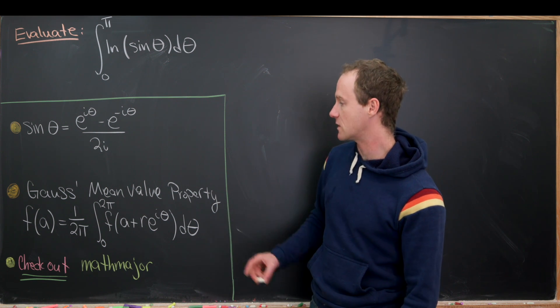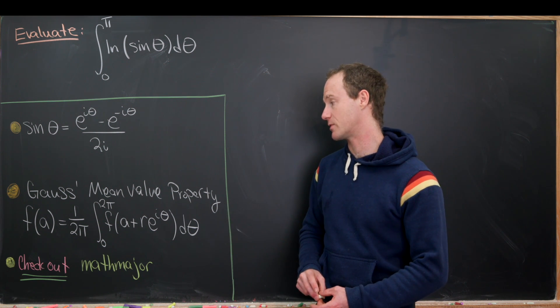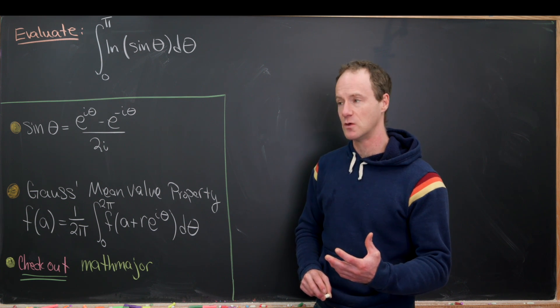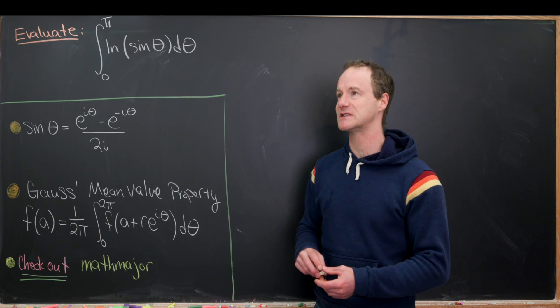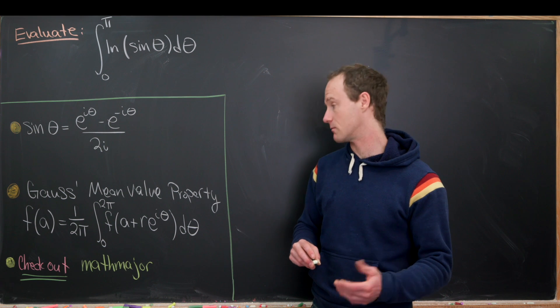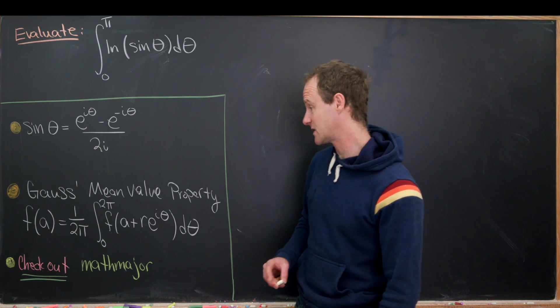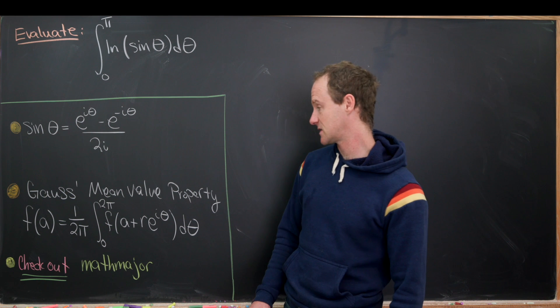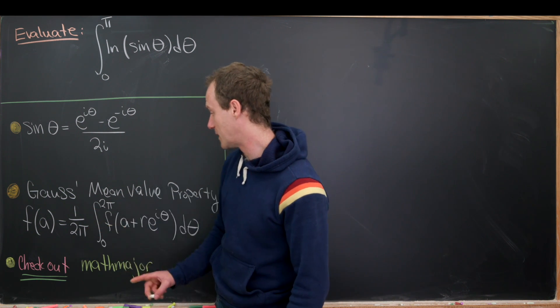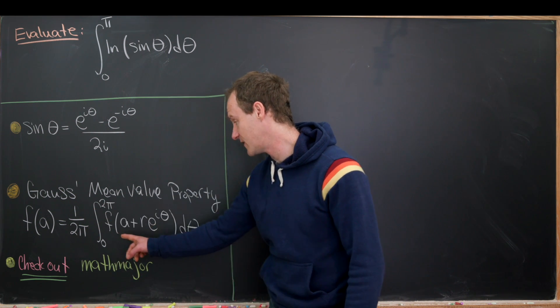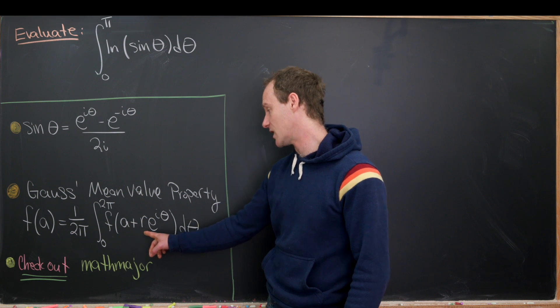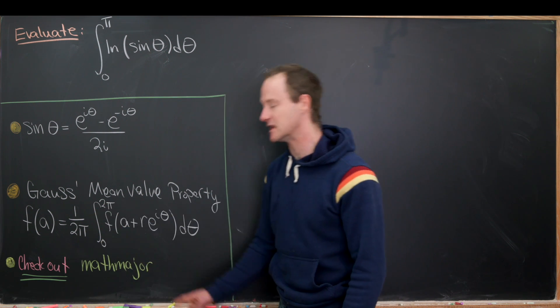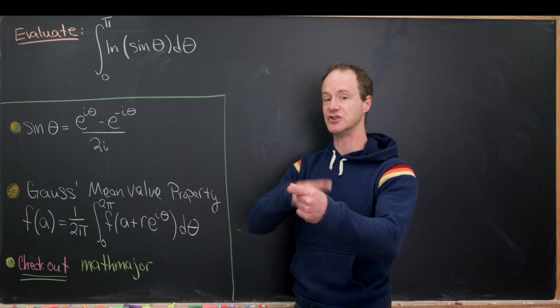But we're also going to use something called Gauss's mean value property. And that says if you have a function f, which is, well, it technically has to be analytic or at least has to be harmonic on some disk, then the value of that function at the center of the disk is equal to 1 over 2 pi times the integral from 0 to 2 pi of f evaluated at a plus r e to the i theta d theta. And so this represents the line integral around the edge of that disk.